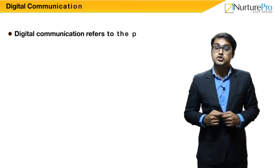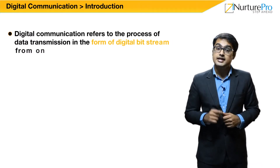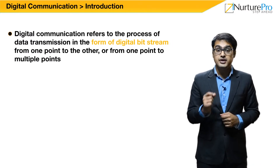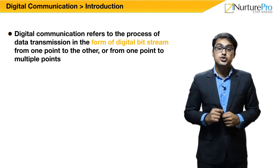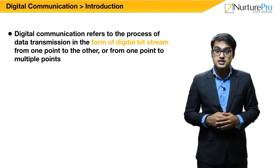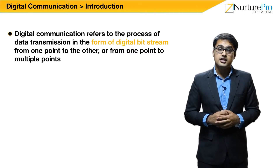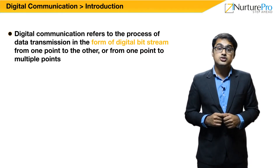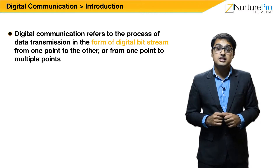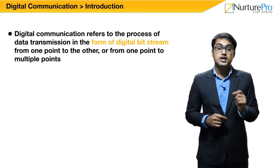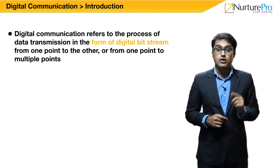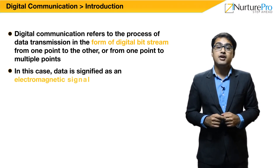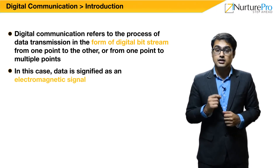The term data is commonly used in digital communication. Data is any form of information that has been put into digital form so that it can be handled by digital systems. Data is measured as a bit. Digital communication refers to the process of data transmission in the form of a digital bit stream from one point to the other, or from one point to multiple points. In this case, data is signified as an electromagnetic signal.